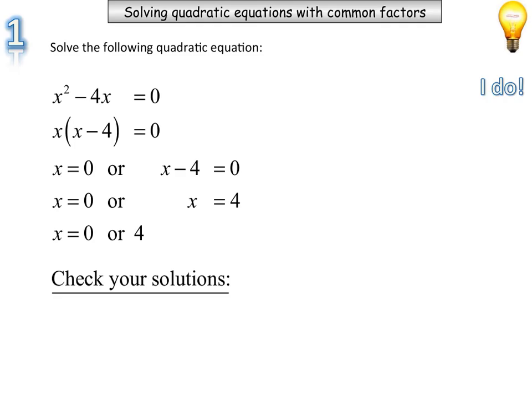We can always check our solutions, just to make sure that we had our correct solution. So subbing our first one, 0, into our first expression: 0 squared, take away 4 times 0. We need to be getting an answer of 0 for it to be true. 0 take away 0 is 0, so therefore that's true.